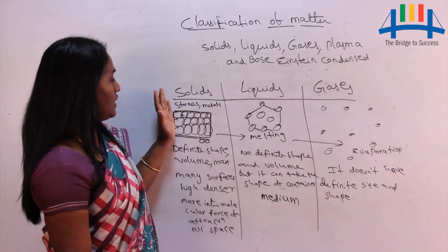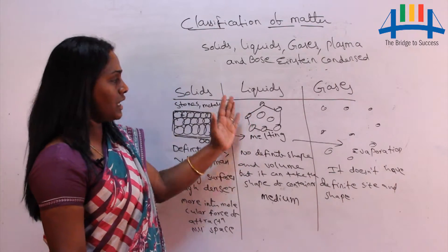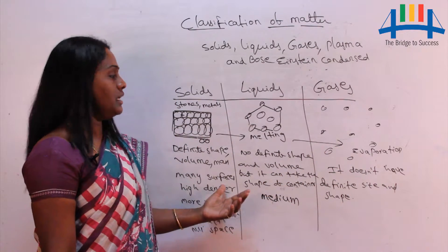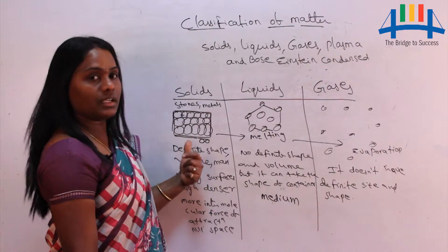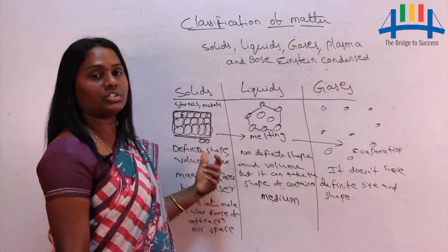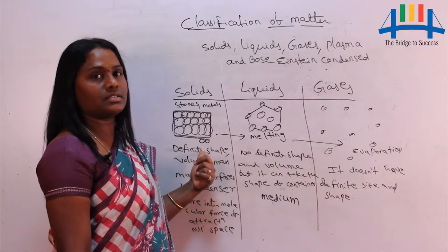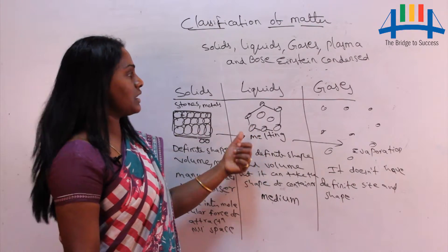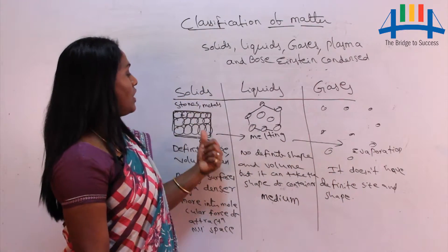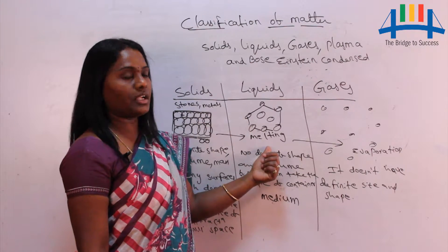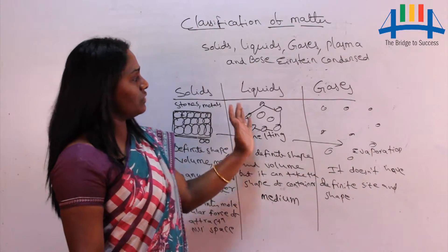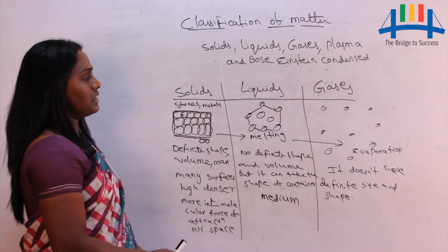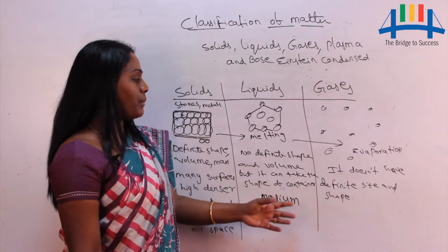We can convert solid state to liquid state and liquid state to gaseous state by applying heat energy. Kinetic energy — the motion or movement of particles — increases, thereby solids convert into liquids and liquids convert into gases. The process of solid to liquid is called melting, and the conversion of liquid state to gaseous state is called evaporation.